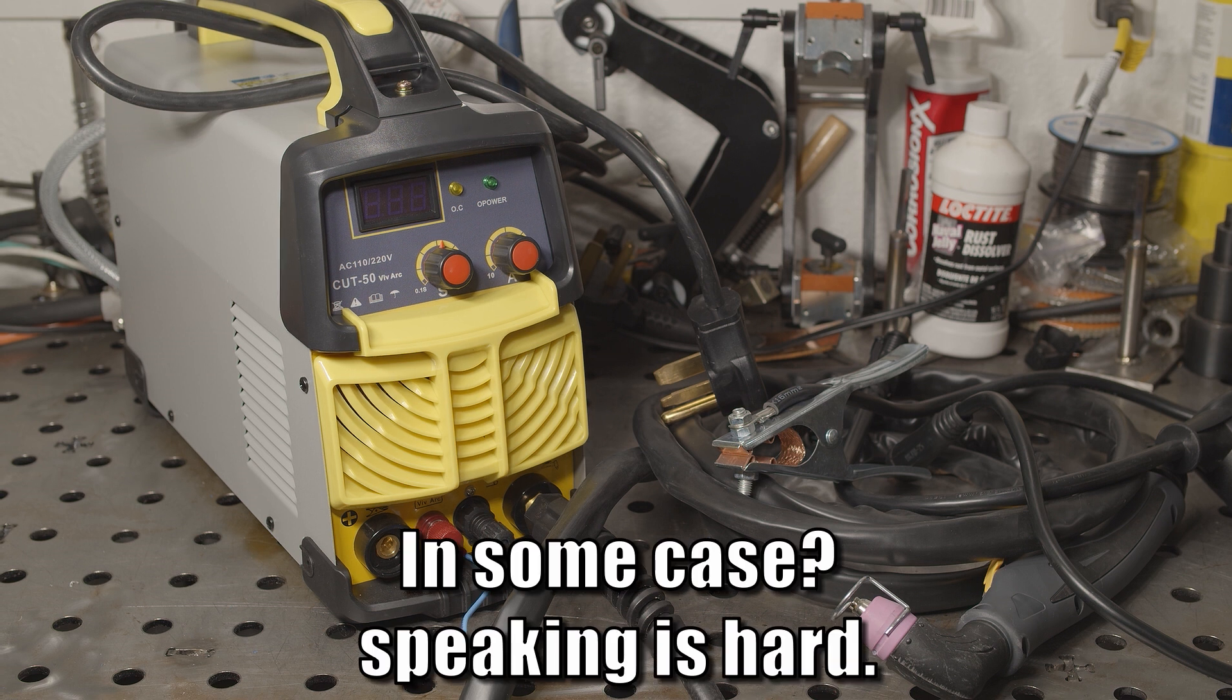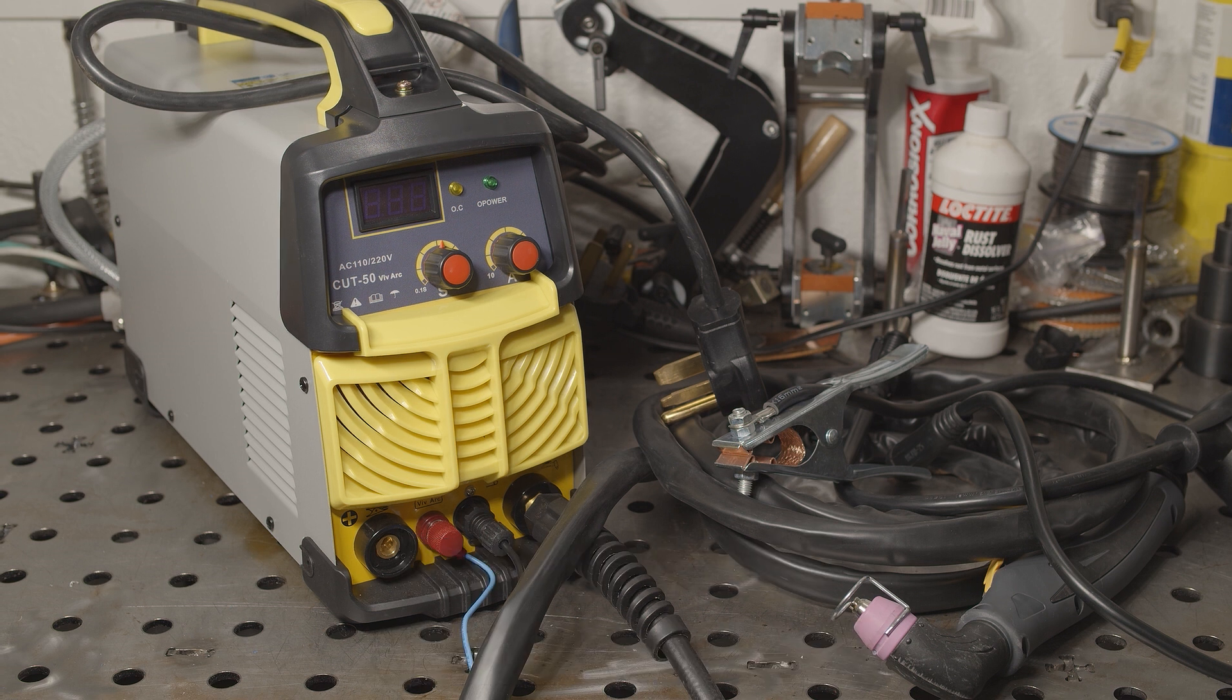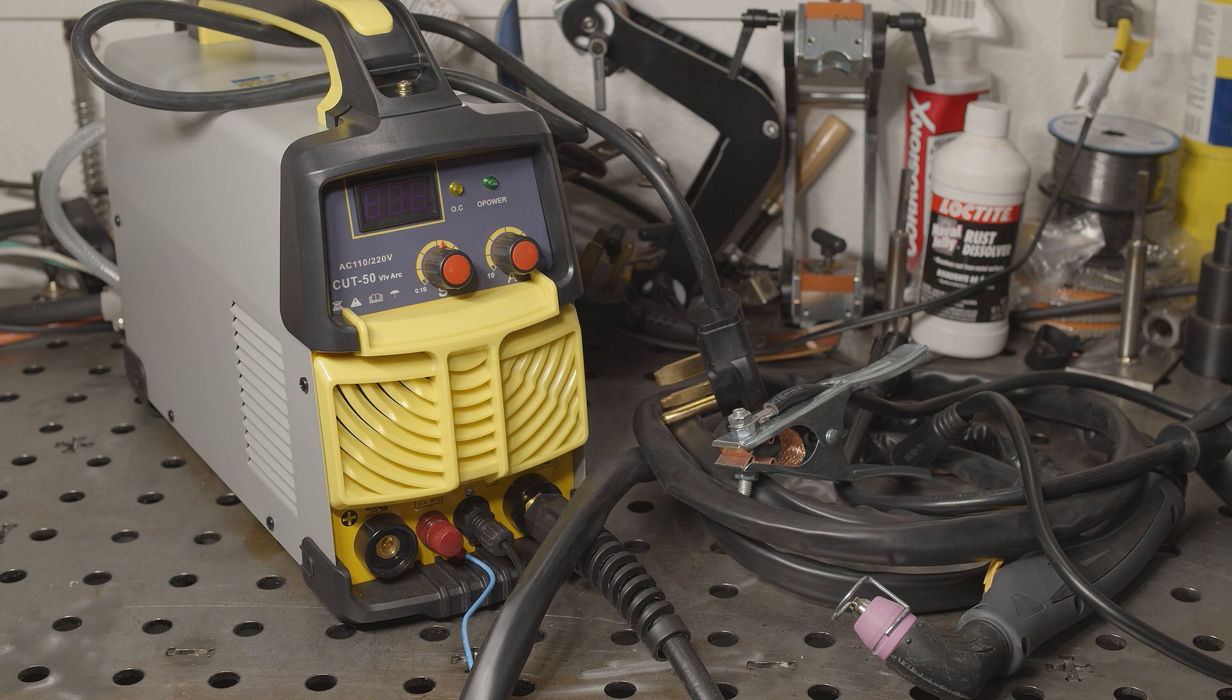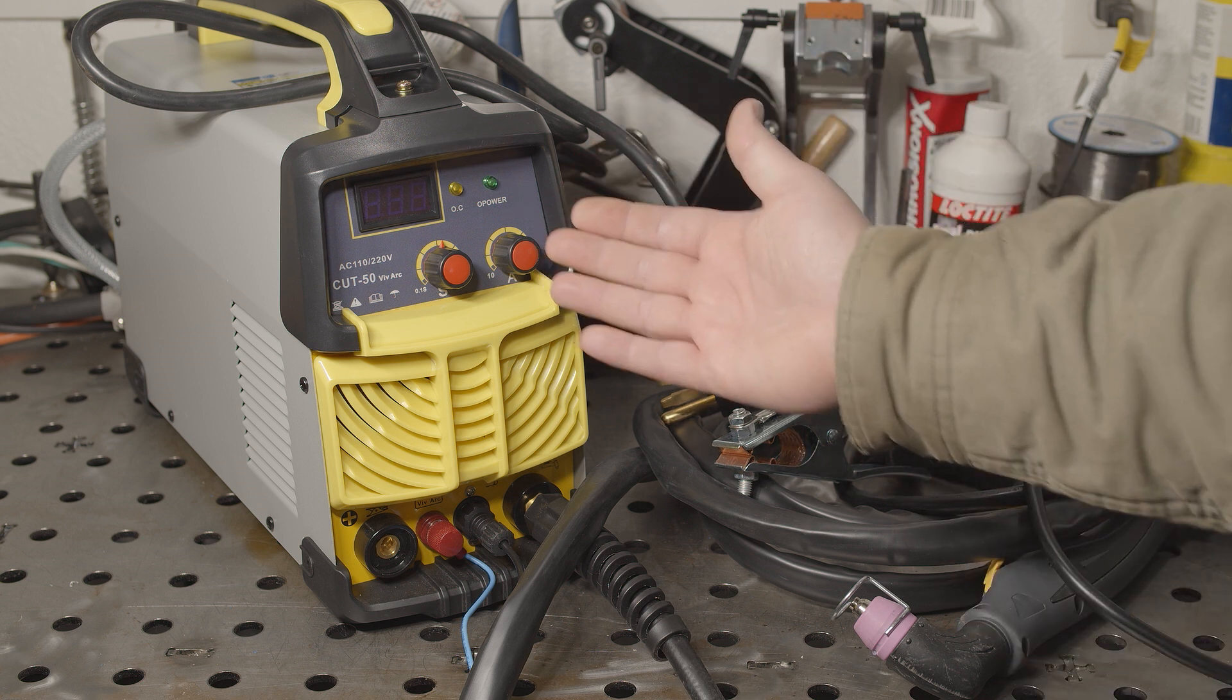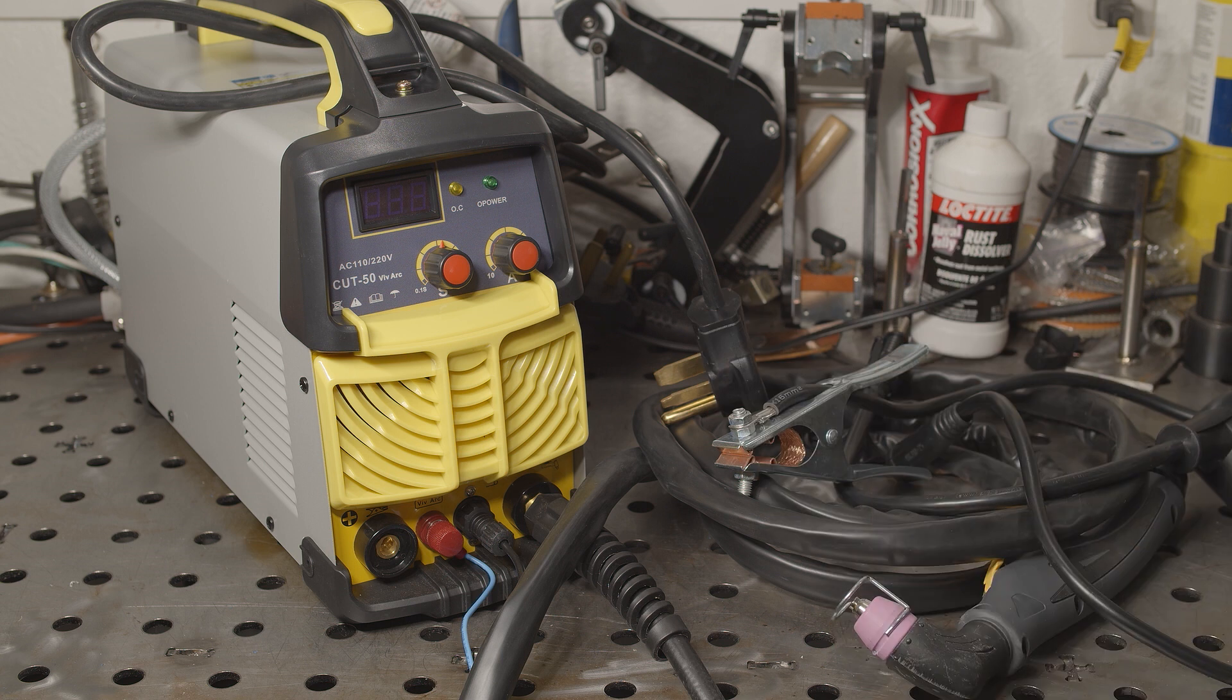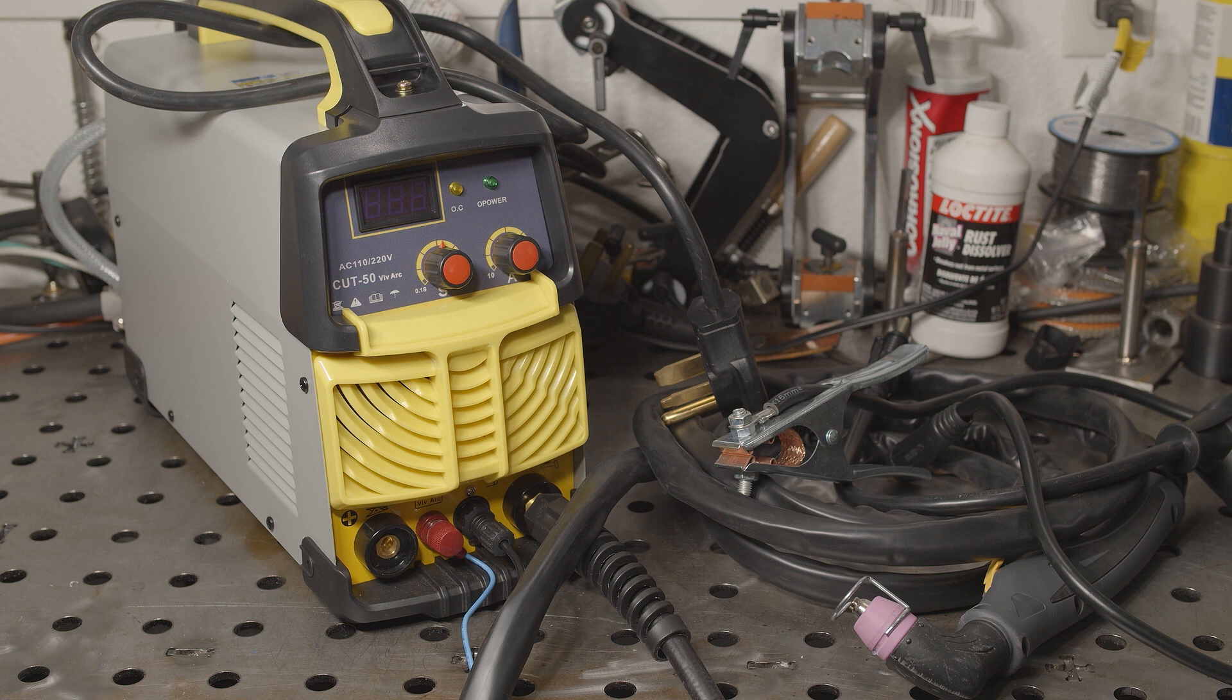What I ended up with is this S7 brand Cut 50. This model is available on Amazon for around $275, and it does have a pilot arc. The specs for this plasma cutter claim 10 to 50 amps of output, but the display on mine adjusts from 19 to 52 amps. We'll see how well it cuts and what the actual output is when we get to that point.